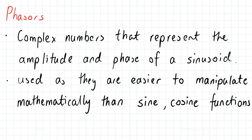So when we talk about phasors, we are talking about complex numbers that represent the amplitude and the phase of a sinusoid. We use them in our analysis of AC circuits, due to the fact that they are easier to manipulate mathematically than the sine and cosine functions that we have been working with recently.